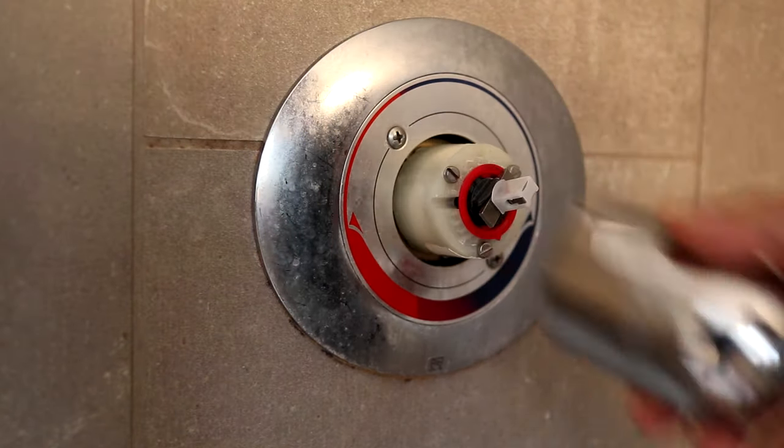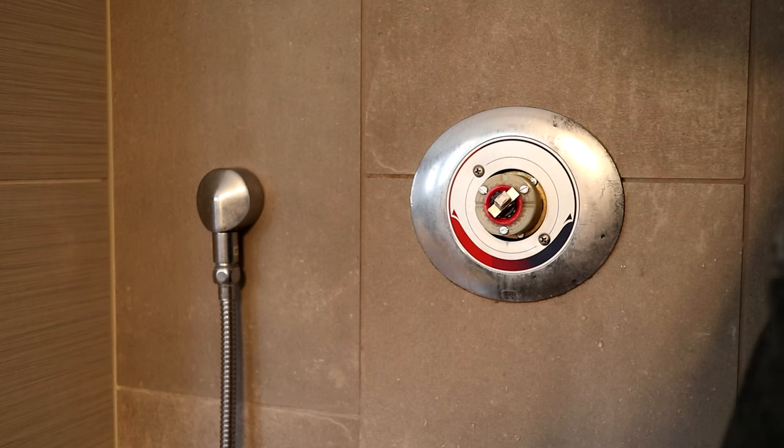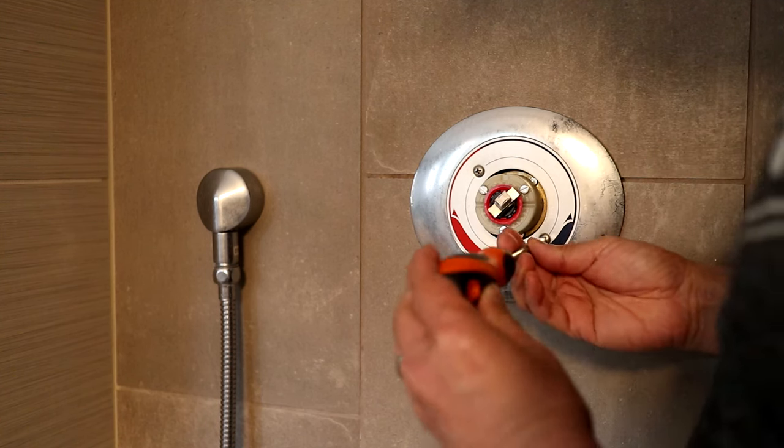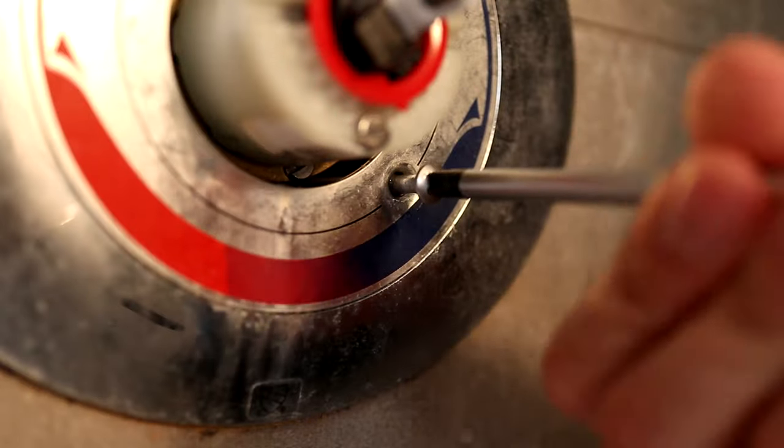Now the collar can be slipped right out. The cover plate has two screws that need to be removed. Once these screws are out, the face plate can be pulled off.